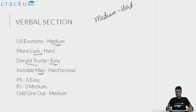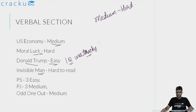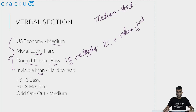The essay on Donald Trump had fairly easy questions — only one was slightly tricky, but overall three questions were definitely manageable. The RC section was slightly on the medium to hard side because two passages were hard to read and tiring. But it depends on your interests — if you are interested in philosophy or novels, you might find one of the two difficult essays to be on the easier side.